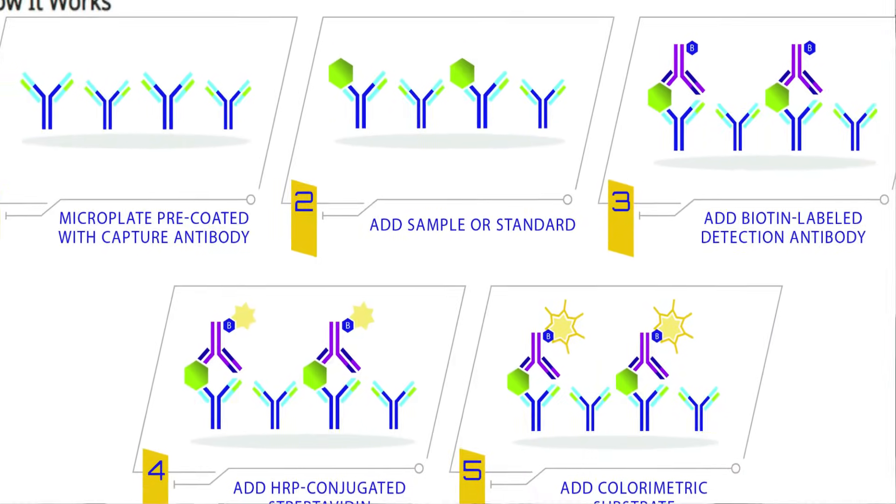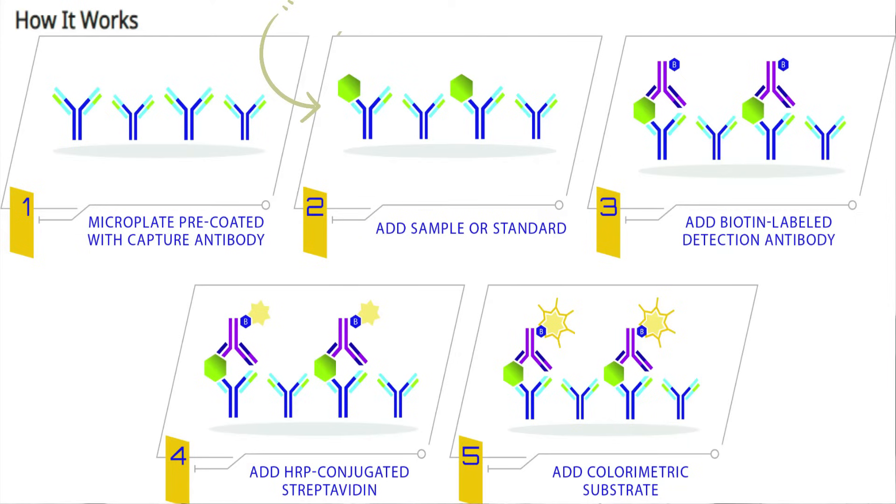This is a single plex sandwich assay format, meaning the capture antibody is going to capture an antigen. A biotinylated detection antibody is going to detect that antigen. Horseradish peroxidase is going to find that biotinylation.